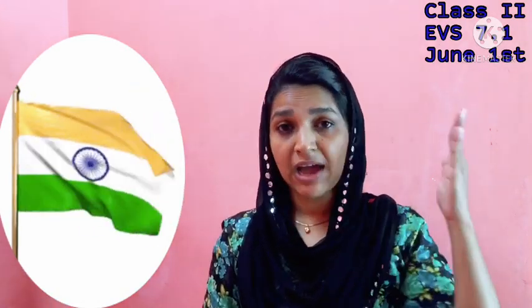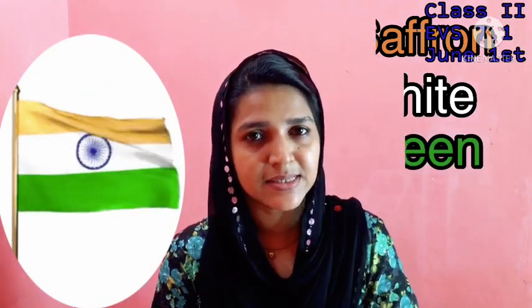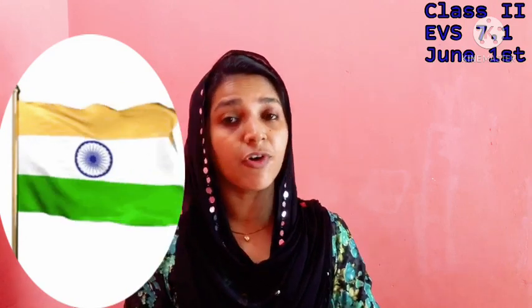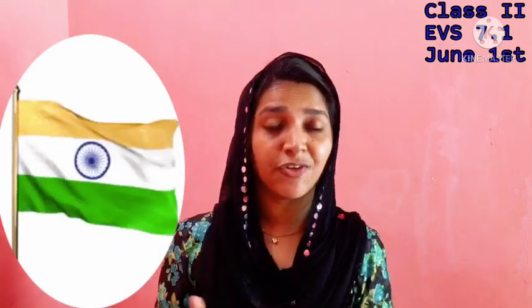Let us start with our national flag. How many colors are there in our national flag? Yes, there are three colors. Which are they? Saffron, white and green. Do you know each color stands for some purpose? The top band color is saffron, and saffron stands for courage and sacrifice.